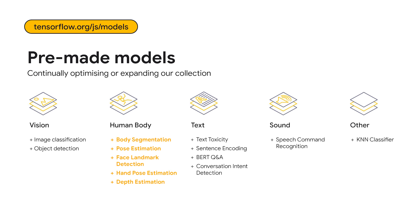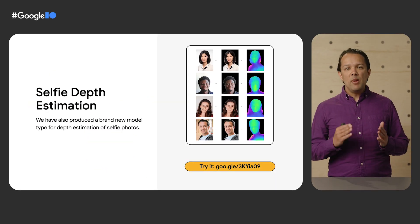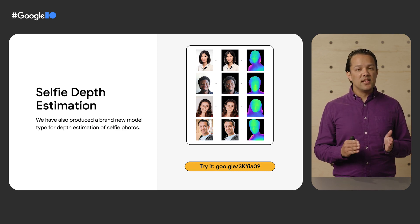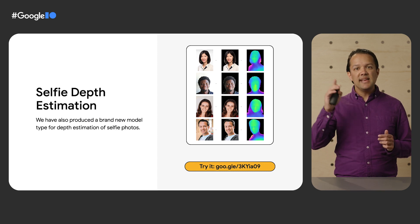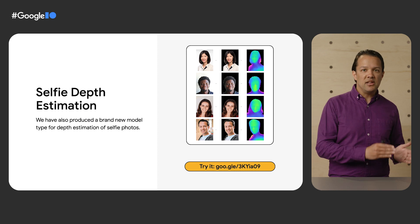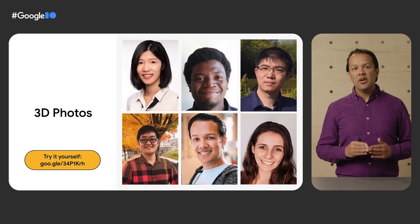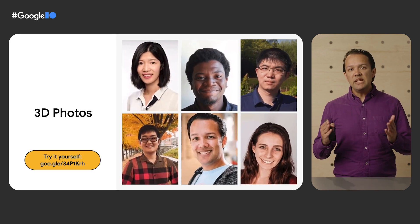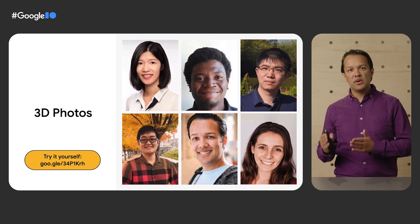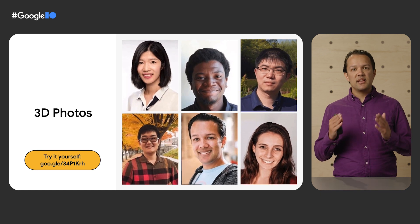Check out tensorflow.org/js/models to see them all as we add even more over time. So what model updates are new for 2022? First up, we're pleased to announce the launch of a brand new selfie depth estimation model that's capable of estimating the distance from each pixel to the camera, as illustrated by the images on this slide. If you can understand the depth of the human body in an image, you can do some amazing things — for example, enabling 3D photos live in the browser. A single image is passed through the selfie depth estimation model, allowing the user to produce a subtle 3D effect that can bring the image to life.